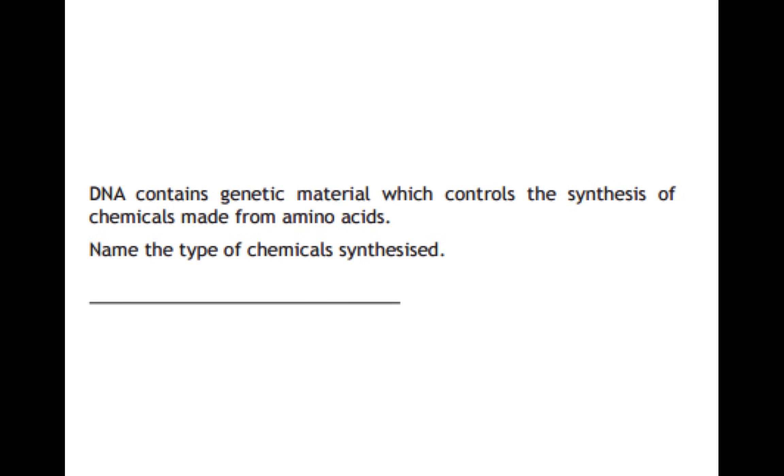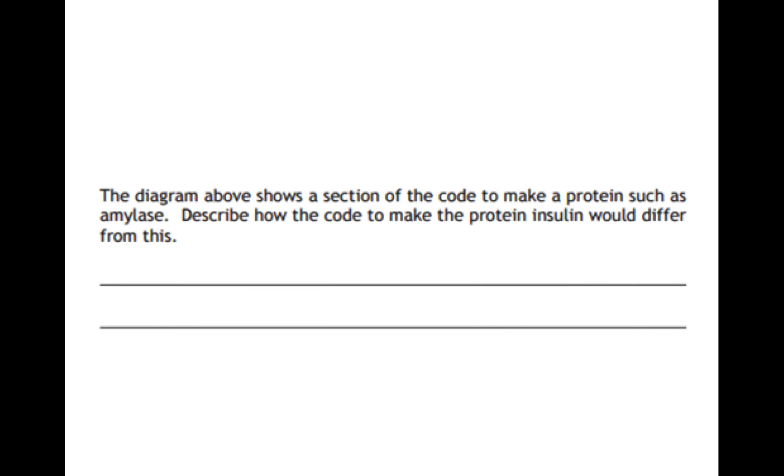This question here of protein synthesis asks: DNA contains genetic material which controls the synthesis of a chemical made from amino acids. Name the type of chemical synthesized. Just try and get into your head: at the ribosome, site of protein synthesis, amino acids are synthesized or made into proteins. And the diagram above shows a section of the code to make a protein such as amylase. Describe how this code to make the protein insulin would differ from this. All it is asking is how would these codes be different? How would the code for amylase be different from the code for insulin? All you need to know is that different sets of genetic information or different orders of base pairs code for different proteins. That is why they would be different. They have a different order of base pairs, different order of amino acids and then different proteins.